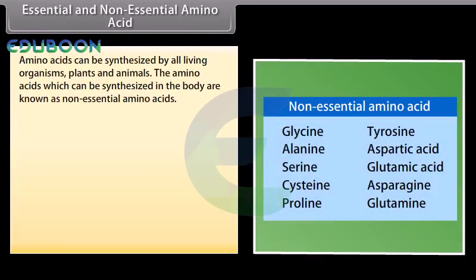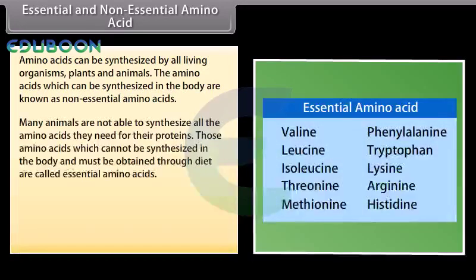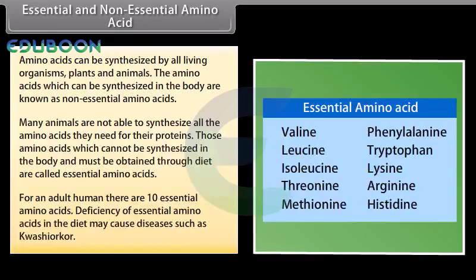Amino acids can be synthesized by all living organisms, plants and animals. The amino acids which can be synthesized in the body are known as non-essential amino acids. Many animals are not able to synthesize all the amino acids they need for their proteins. Those amino acids which cannot be synthesized in the body and must be obtained through diet are called essential amino acids. For an adult human, there are 10 essential amino acids. Deficiency of essential amino acids in the diet may cause diseases such as kwashiorkor.